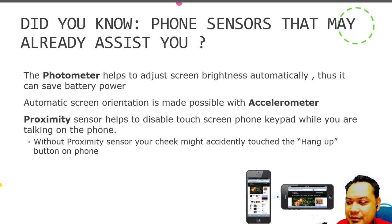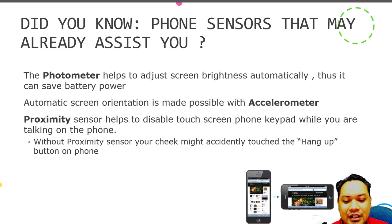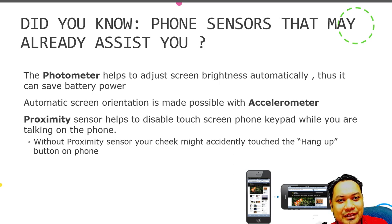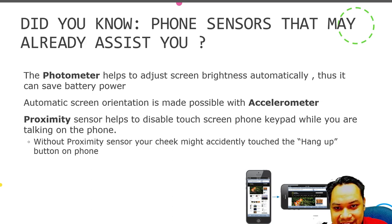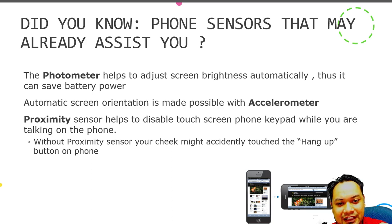The proximity sensor also helps by disabling the touch screen while you are talking on the phone. When you receive a call and hold the phone to your ear, the screen automatically turns dark — this is done by the proximity sensor to prevent you from accidentally pressing buttons or ending the call. Budget phones that lack a proximity sensor will have this weakness — when you hold them to your ear, you might accidentally press the keypad or even accidentally hang up the call.